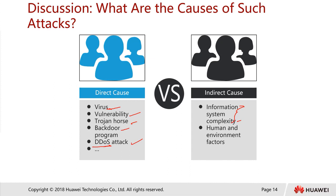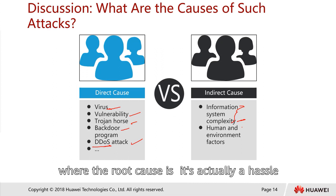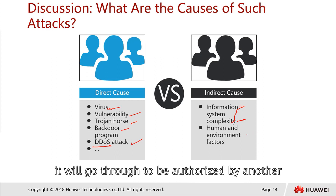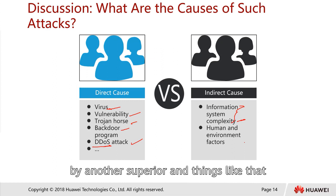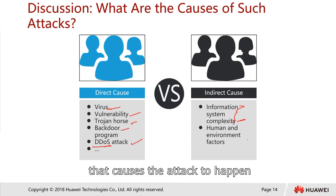Information complexity can arise from complex company workflows where information has to be authorized through multiple levels of management, and any one compromised system can cause an attack. It could also be due to the complexity of equipment — for example, payment system terminals or even airplane entertainment systems could serve as a potential entry point.